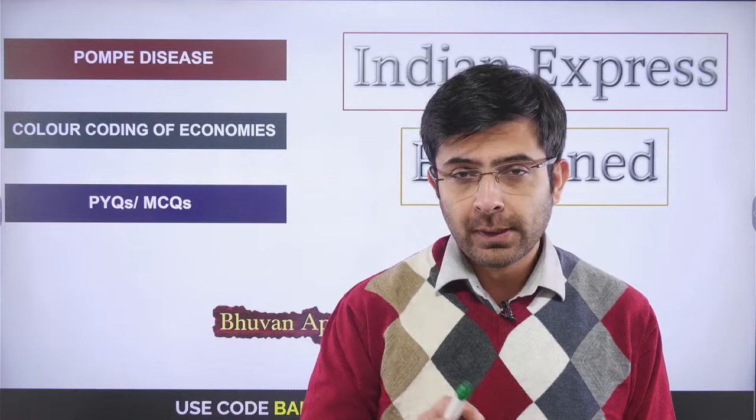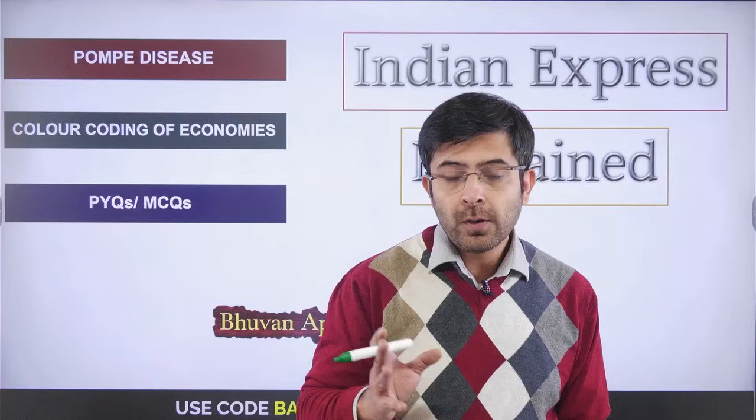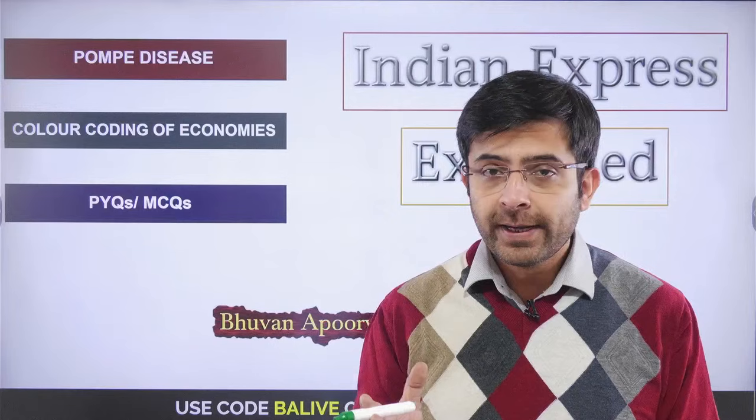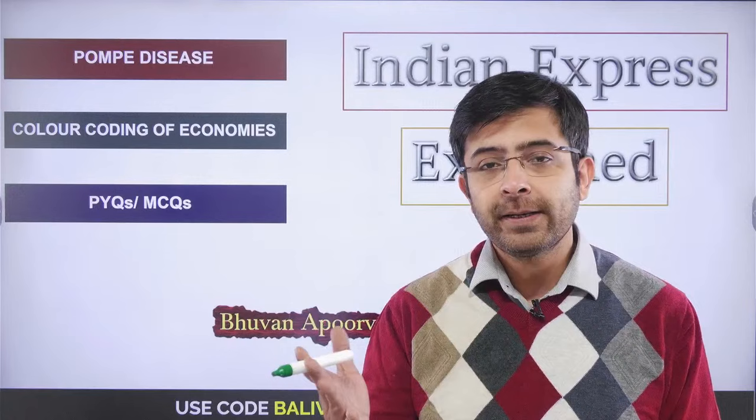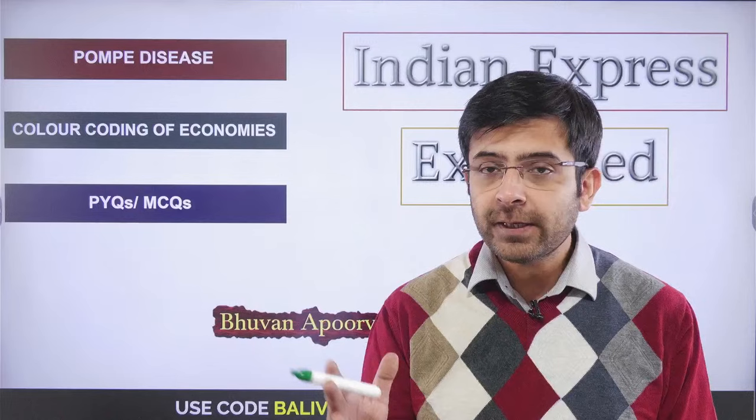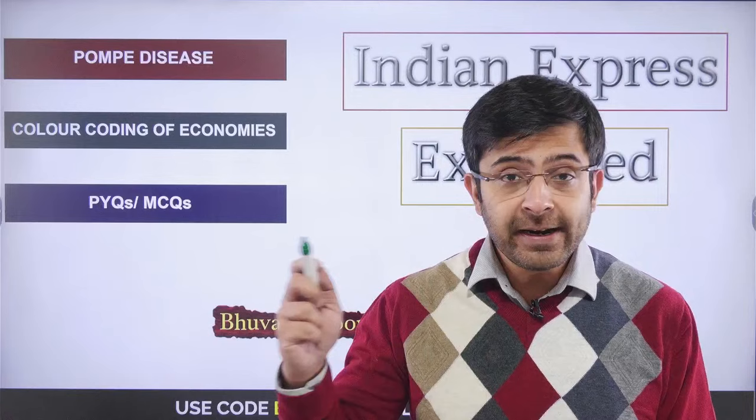I have two agenda for you today — just two topics. First is a direct article picked from the EXPLAIN page of Indian Express. Number two is to do with the color coding of economies. Economies are largely compartmentalized into ten sorts of varieties, different colors, each with a different meaning, and this color coding is in direct relation to the implementation of sustainable developmental goals.